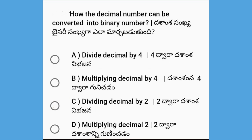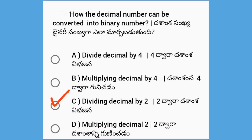Next, how can a decimal number be converted into a binary number? The options are: divide decimal by 4, multiply decimal by 4, divide decimal by 2, or multiply decimal by 2. The answer is dividing decimal by 2 — dividing by 2 repeatedly gives us the binary number.